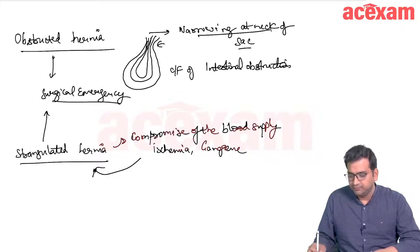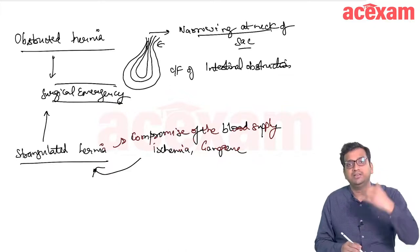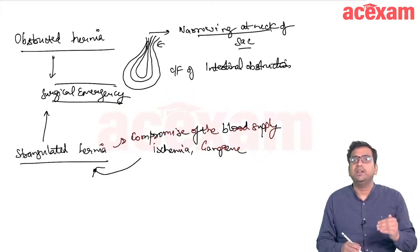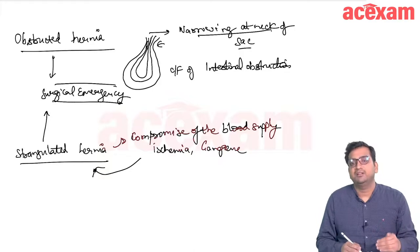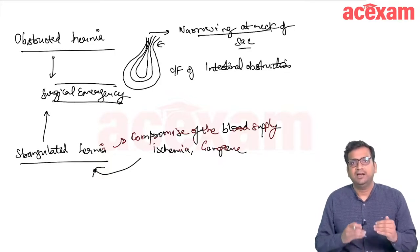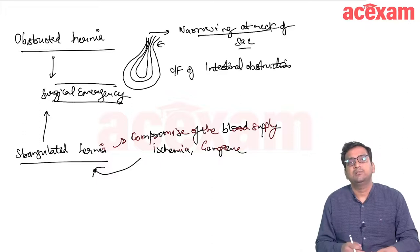The hernia progression goes: reducible → irreducible → obstructed → strangulated inguinal hernia.